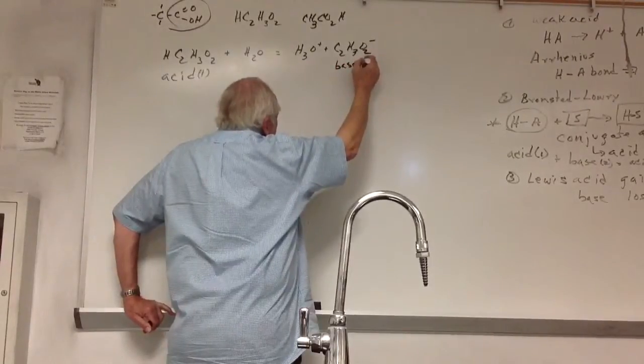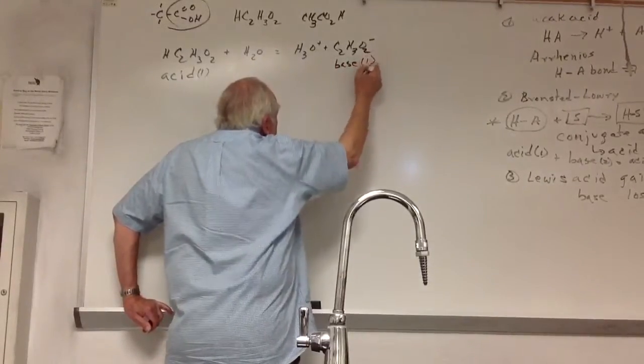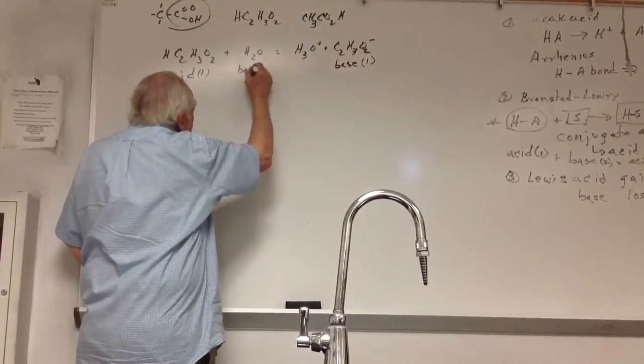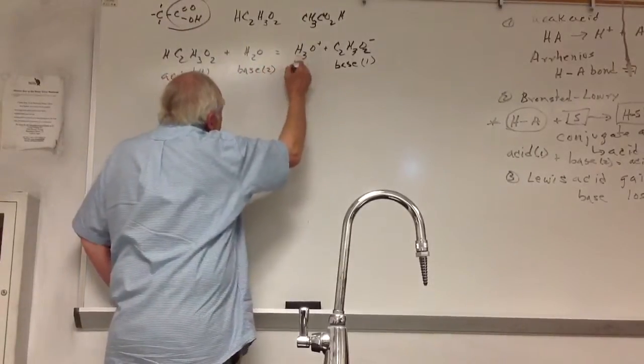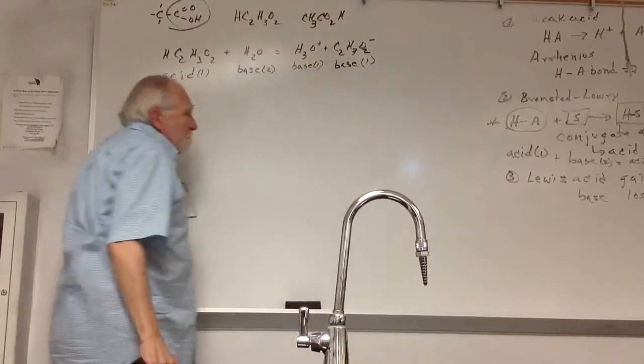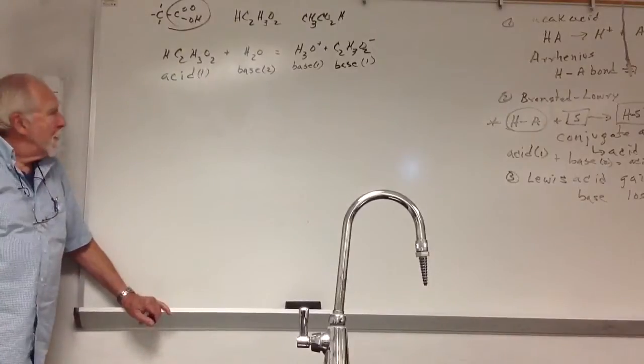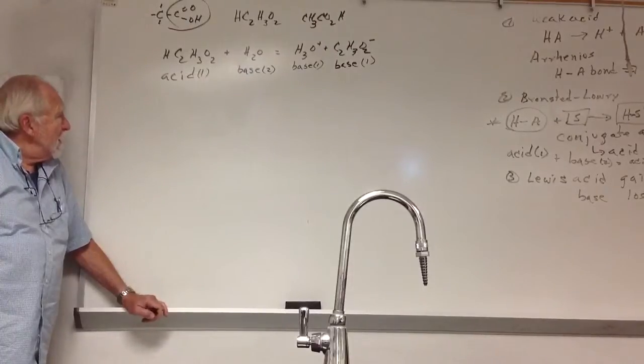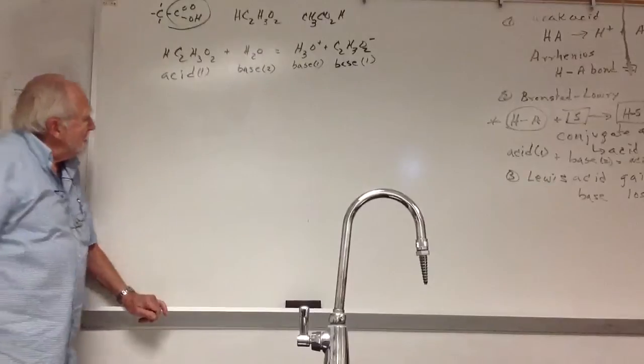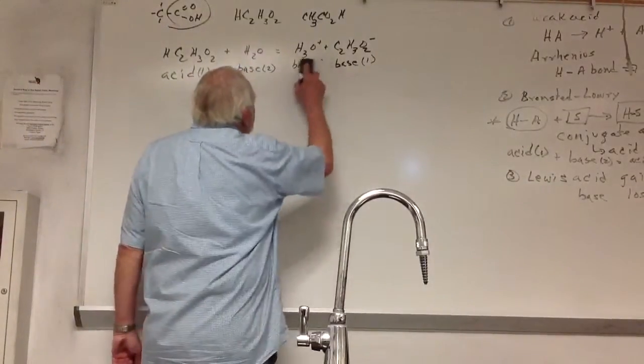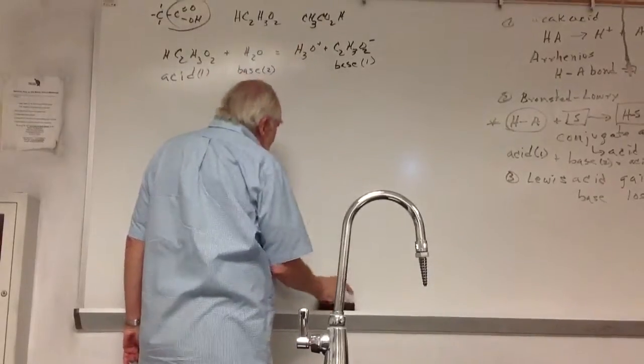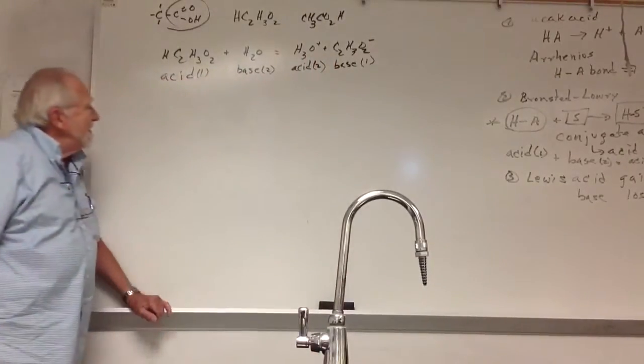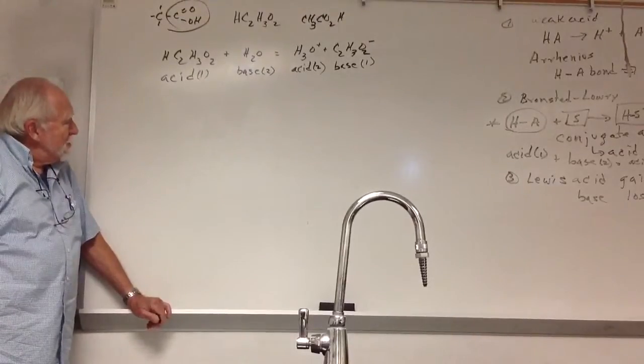This is acid 1. Some folks use A and B to label the pairs. Here's an extra H+ compared to this, so this is base—wait, acid 2. And this is base 2, partner 1. There's the conjugate acid-base pairs. And we've got our dissociation equation.